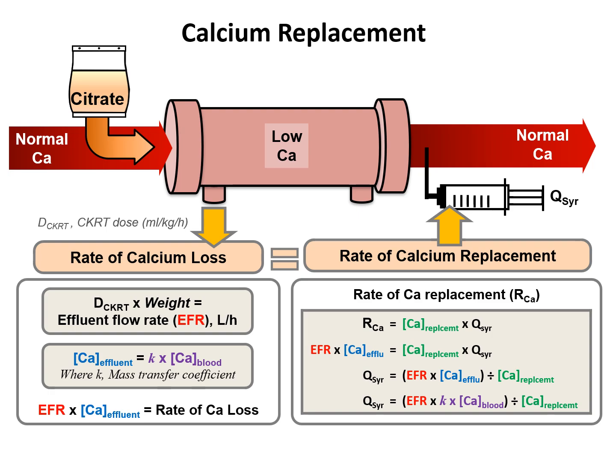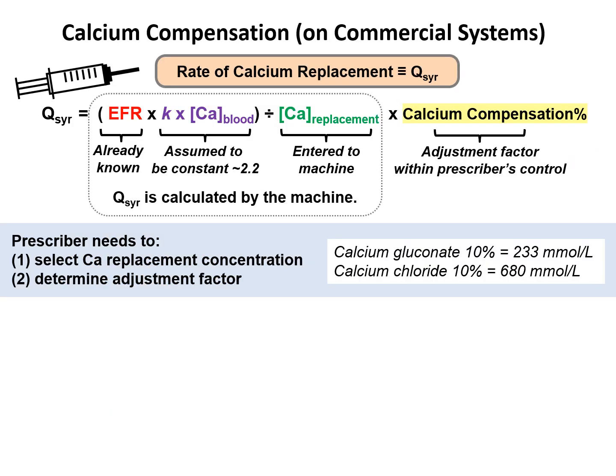These may look like a complex set of calculations, but most machines that handle regional citrate anticoagulation would have protocols to calculate the syringe flow rate of the calcium replacement fluid. Specific for Baxter systems, this is the formula embedded into the system. The effluent flow rate is already entered as part of the CKRT prescription. The prescriber needs to select the calcium replacement fluid concentration — quite often calcium gluconate 10%, with a calcium concentration of 233 millimoles per liter, or calcium chloride 10% with 680 millimoles per liter. The machine then calculates the syringe flow rate.